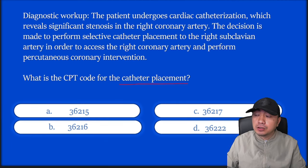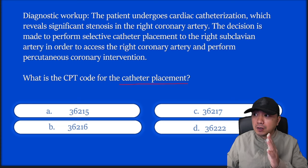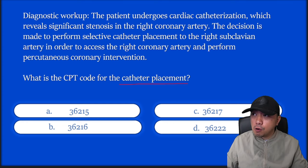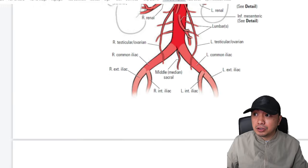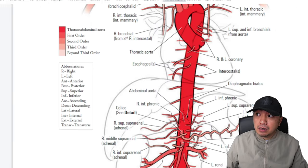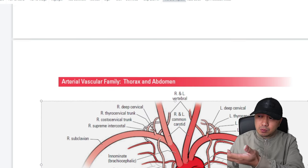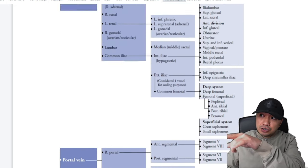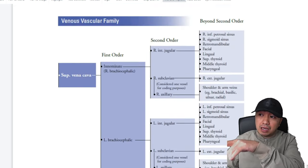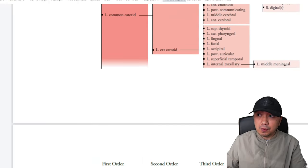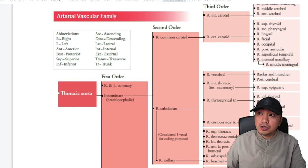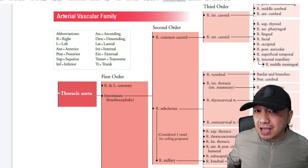For this procedure, it's a catheter placement. For checking your catheter placement under your vascular family, you can go to Appendix L at the back portion of your CPT book. I highly suggest using the table there because it will show you if it's first order, second order, or third order, or if it's the main branch. The key concept for selective catheter placement is to check whether it's the main vessel — main vessels are your thoracic aorta, vena cava, abdominal aorta, and so on — then first order, second order, third order.